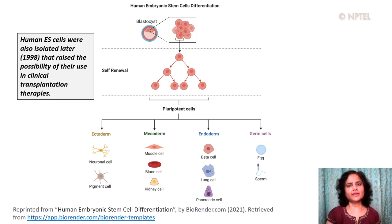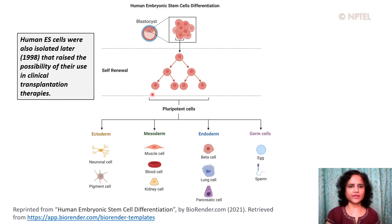Human ES cells were also isolated later from human embryos in 1998, and this raised the possibility of their use in clinical transplantation therapies. These cells could also be differentiated into most types of specialized cells using specific combinations of growth factors, and this had tremendous promise for medicine.